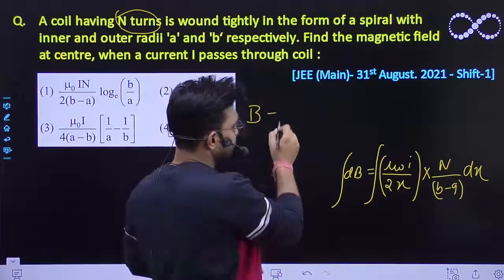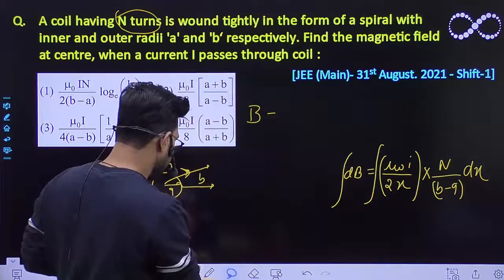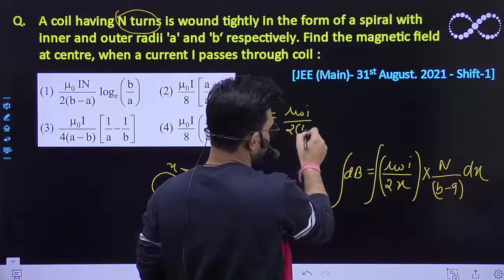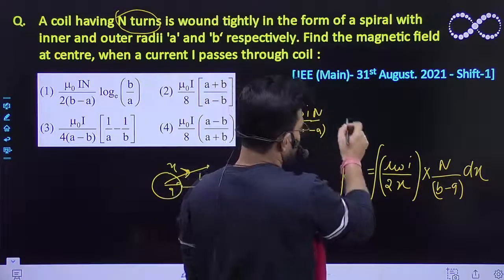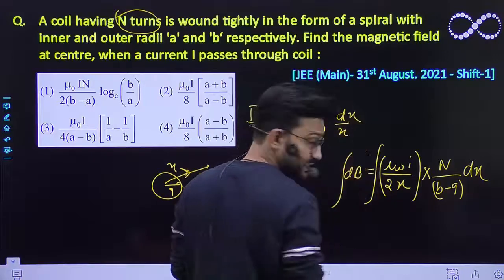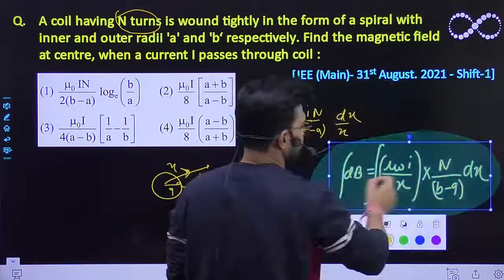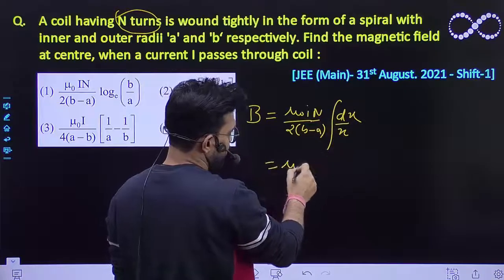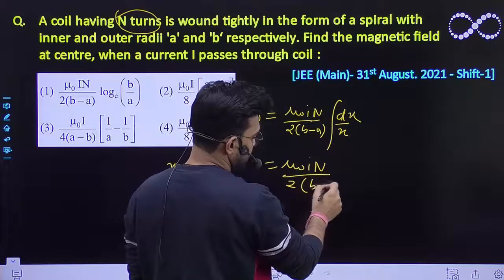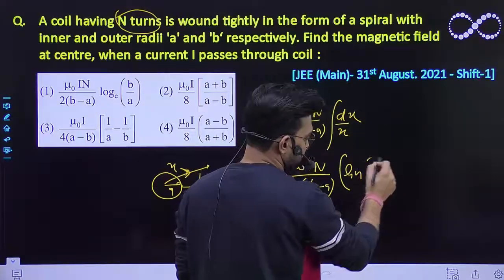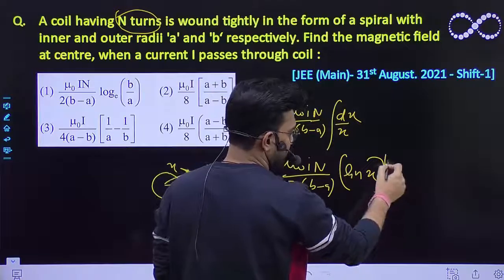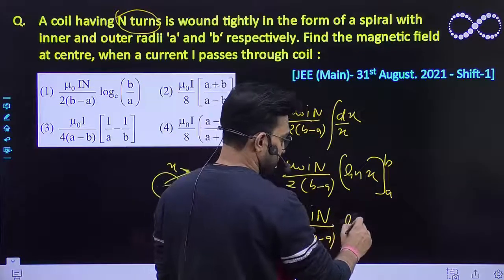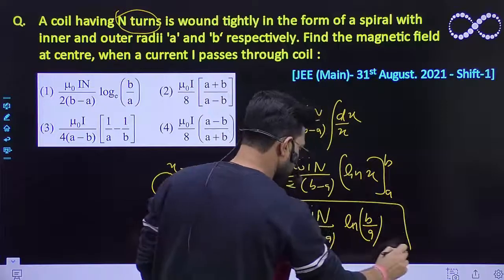So this magnetic field, let it be B, because of all the turns, let the magnetic field would be B. So here it would be μ₀IN/[2(B-A)] and integral of 1/x dx. This is the expression that you are getting. Now again further we have to solve it. Integration of 1/x dx equals μ₀IN/[2(B-A)], it would be ln(x) where x varies from A to B. So it would be μ₀IN/[2(B-A)] ln(B/A). So this is the final expression that we are getting.